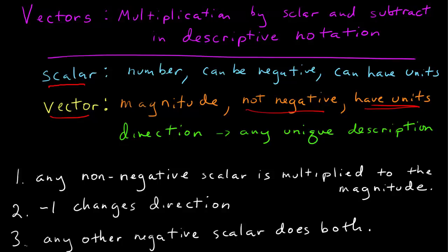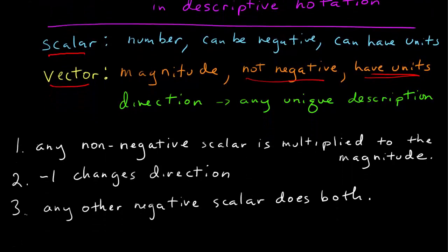And direction can be any unique description that provides the direction the vector is pointing. So the rules for multiplication by a scalar are as follows. For any non-negative scalar, you simply multiply it and the magnitude together.